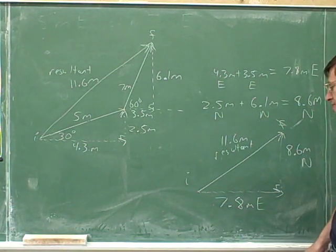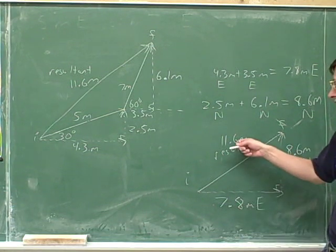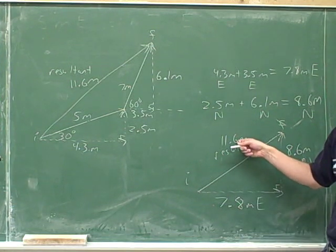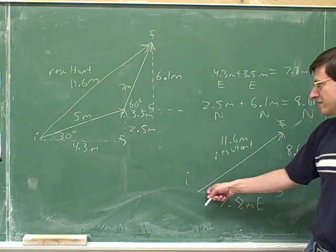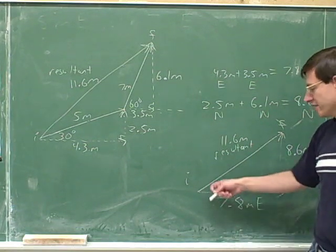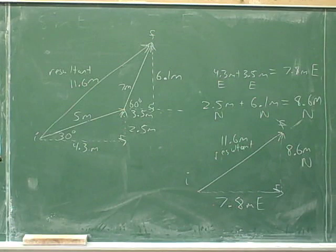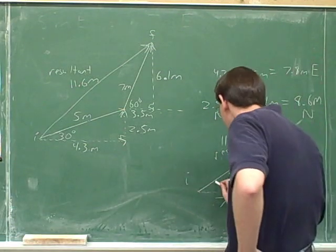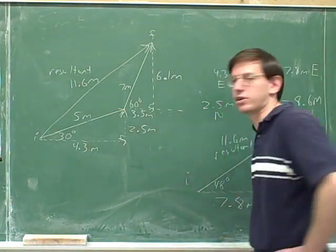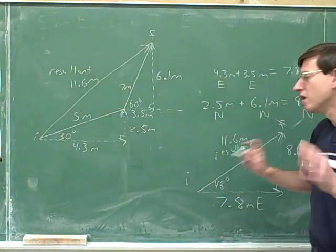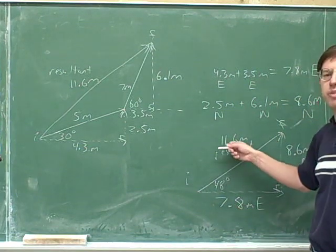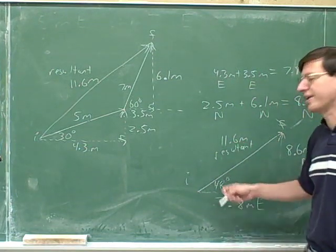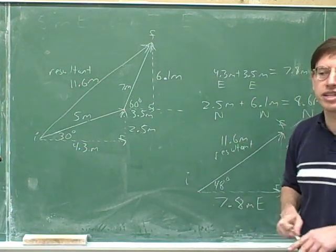That gives you the horizontal and vertical components of the overall resultant vector. Then it just takes a little bit more knowledge about triangles to go back from the components to the overall resultant vector. We could also use a little bit of trigonometry to figure out what the angle is — it turns out that angle is about 48 degrees. Please don't worry if you didn't see how I got 11.6 or the 48 degrees.